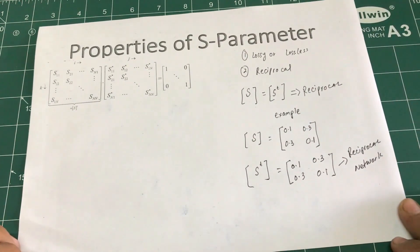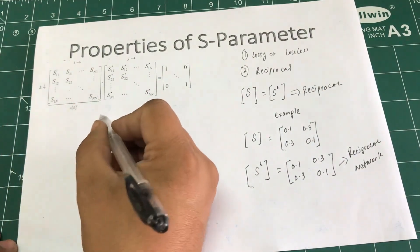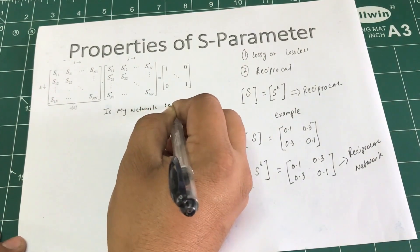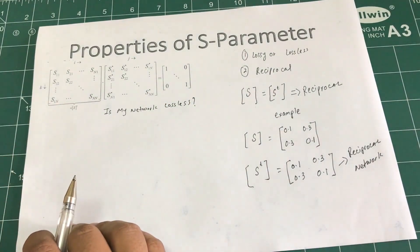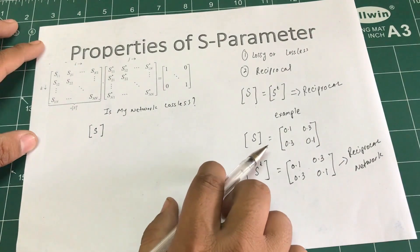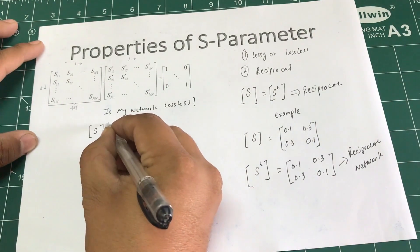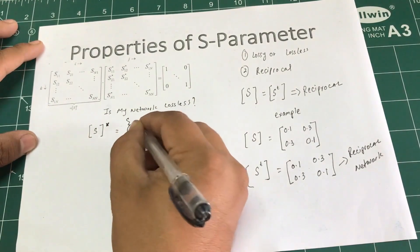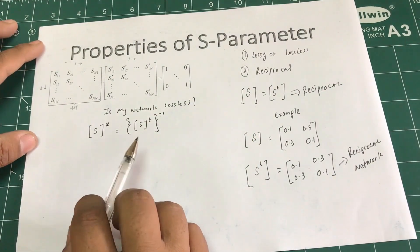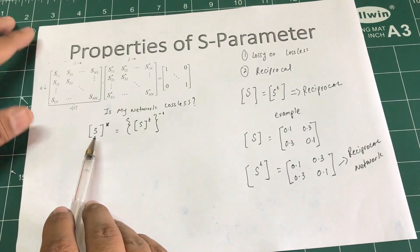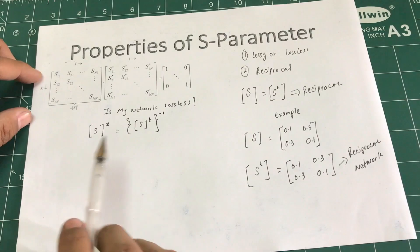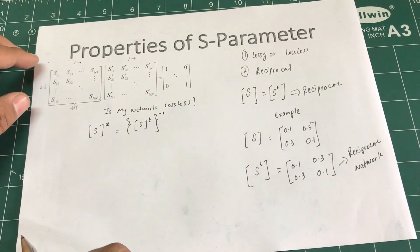Now the first property — is my network lossless or lossy? This is something important to understand. The criteria is: when I take the S-parameter and the conjugate of that network, it should equal the transpose-inverse of that network. For example, if my network has positive values, the conjugate would convert them to negative values.